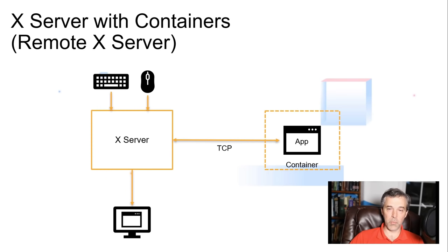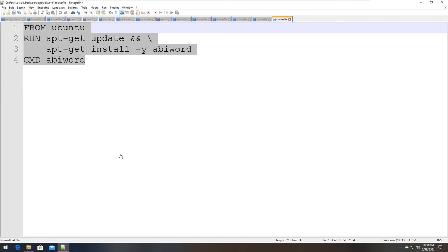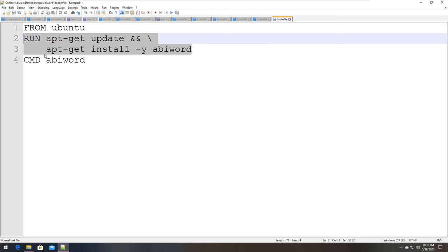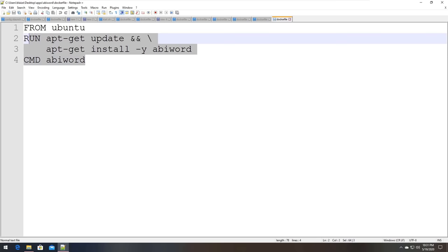In the demo I'm going to do in just a minute, we're going to set up an X server on Windows, and then I'm going to use a Linux-based app inside the container to relay that information back to an X server on Windows. I'll use my keyboard, mouse and monitor on Windows to display that application, so it's going to feel more like a native Windows application — but it's actually running in a Linux-based container on a virtual machine created by Docker Desktop. For this demo, I'm going to start with this Dockerfile. It's an Ubuntu-based image using a couple of apt-get commands to install AbiWord, which is a word processor. I chose this app because it's very easy to install on Ubuntu and it makes for a very clean Dockerfile.